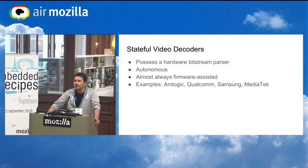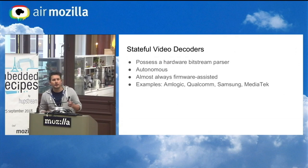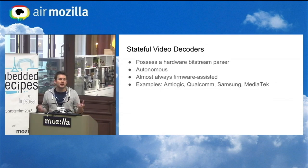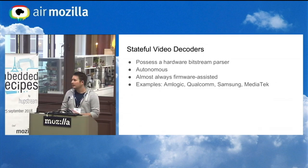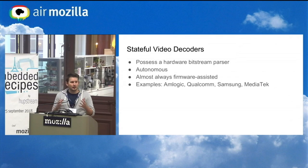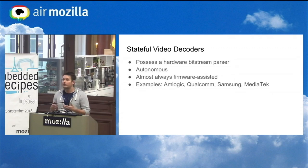When it comes to hardware video decoders, you can have two kinds. Stateful hardware video decoders have a hardware bitstream parser — the video bitstream is the raw compressed data, like an H.264 bitstream. Such stateful decoders already have in hardware or firmware a bitstream parser to get all the data, and they are autonomous in this way. You don't need to control them much from the driver.